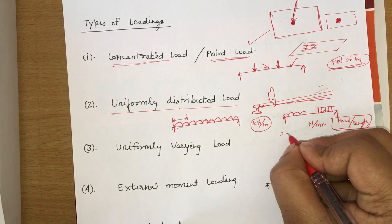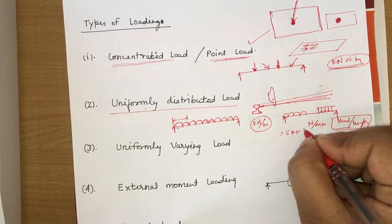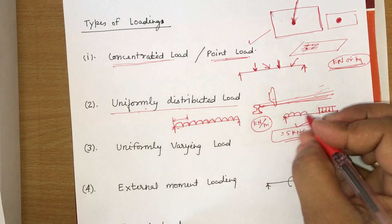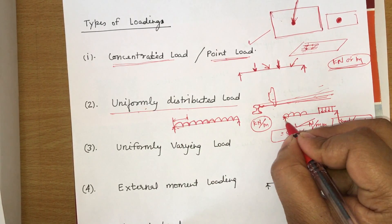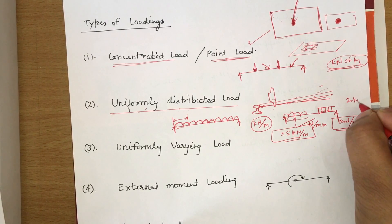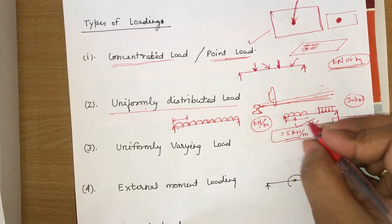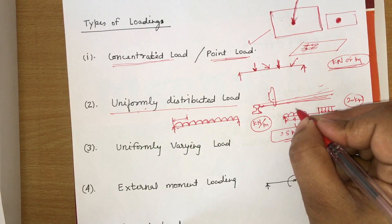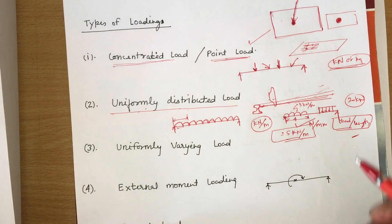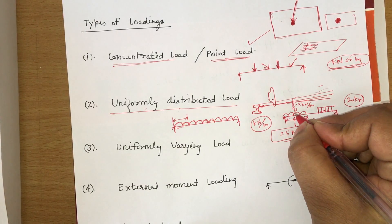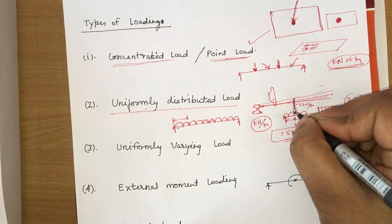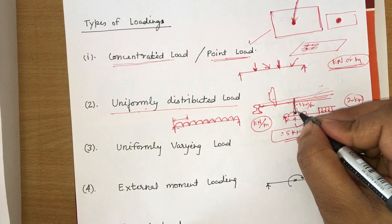For example, if the load is 5 kilonewton per meter over a length of 4 meters, the total load is 5 × 4 = 20 kilonewton, and this resultant will always act at the center of the distributed load.